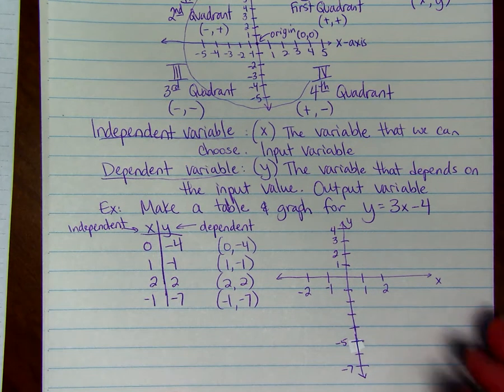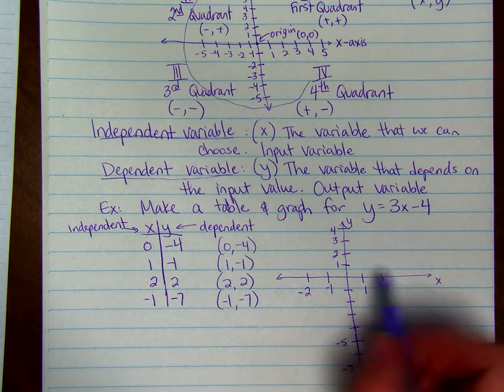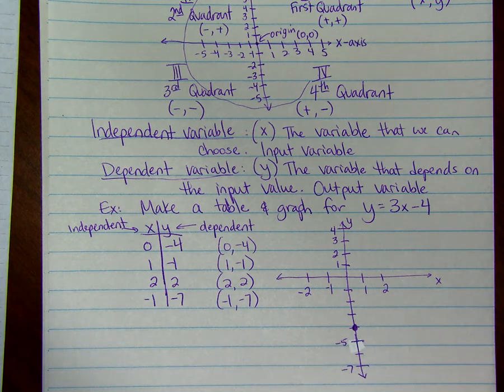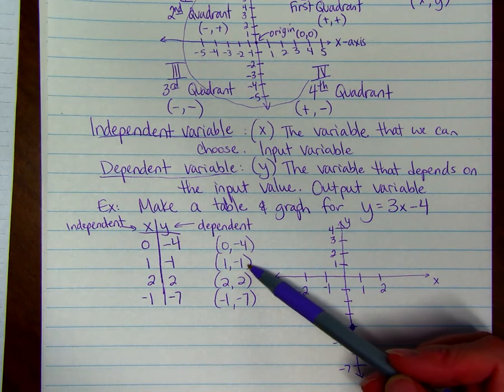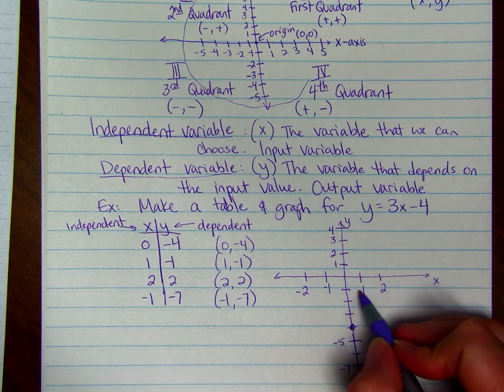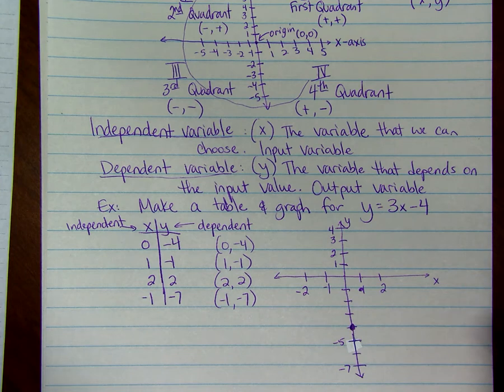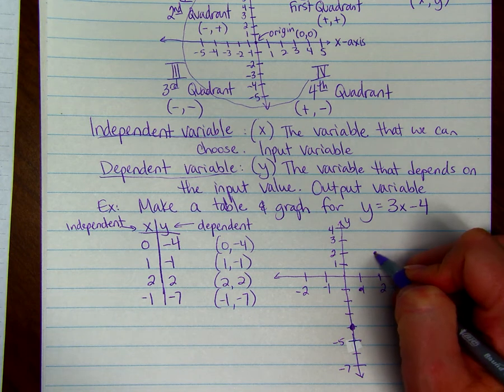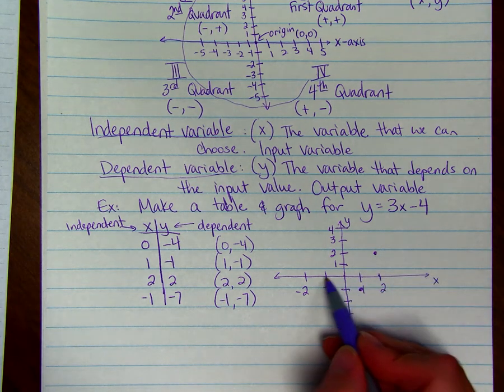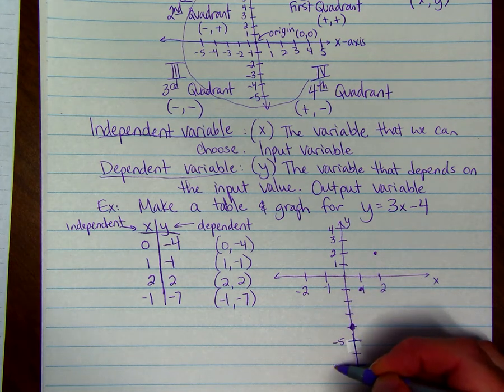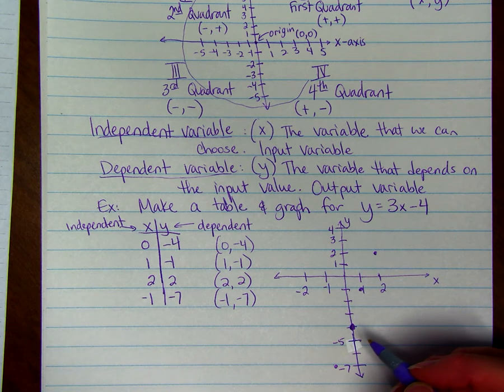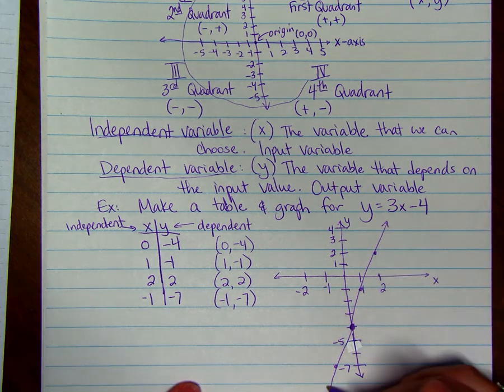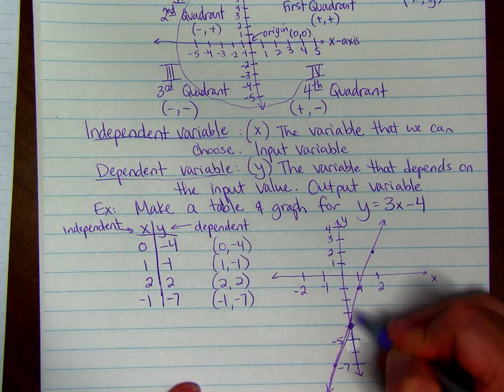So our first point is 0 negative 4, that means we go to 0 on the x axis which is right in the middle, then we go to negative 4 on the y. Once we get there we can put a dot. Then the other point, 1 negative 1, so we go to 1 on x and down to negative 1 on y. 2 2 means we go to 2 on the x and then up 2 on the y. And negative 1 negative 7 means we go to the left one and down 7. It's kind of like battleship, where you have to go over left or right and then you have to go up or down for the second number.